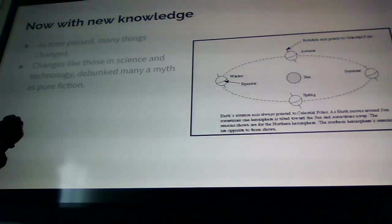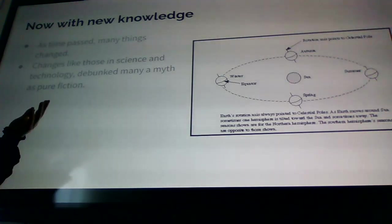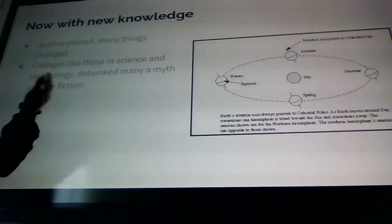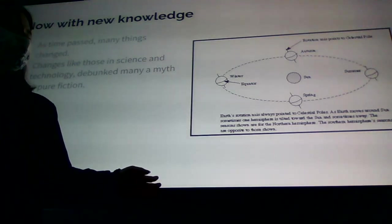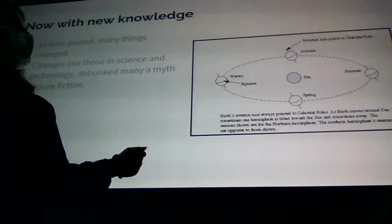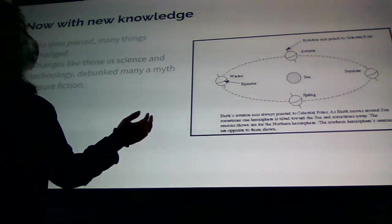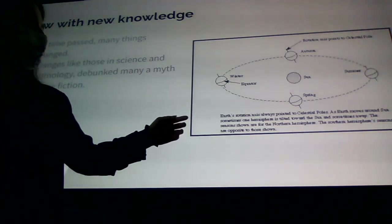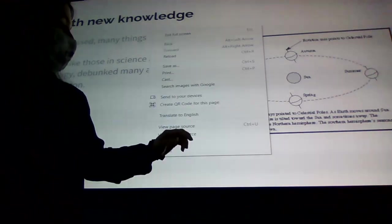Anyways, as time went on, the knowledge of things changed — for example, science. And this is a little science site I found, and it shows how the seasons genuinely change. It says Earth's rotation axis always points to celestial poles.